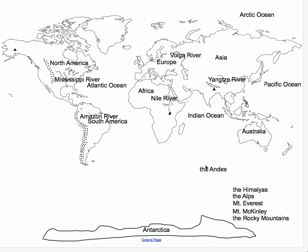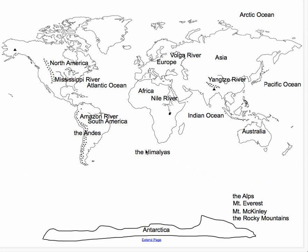The Andes mountain range is in South America, and it runs right down here by Venezuela. Then over here, we have the Himalayas. The Himalayas are located in Asia, right here next to the Yangtze River.